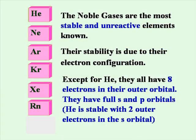The noble gases are the most stable and unreactive elements known. Their stability is due to their electron configuration. Except for helium, they all have eight electrons in their outer orbital — they have full S and P orbitals. Helium is stable with only two outer electrons in the S orbital.